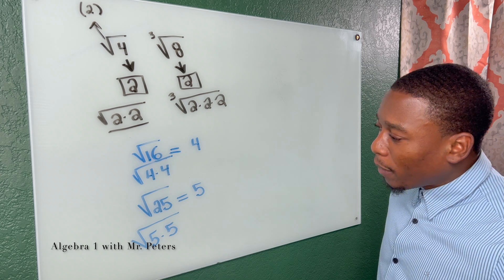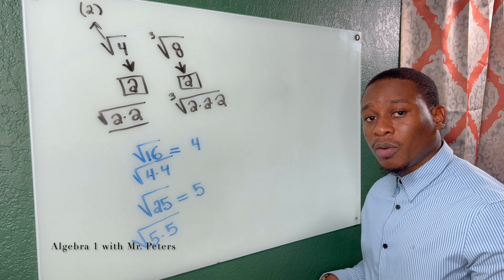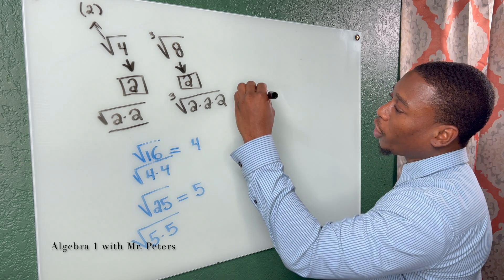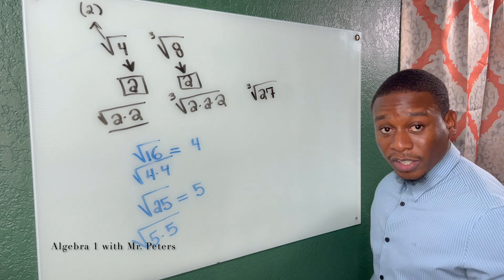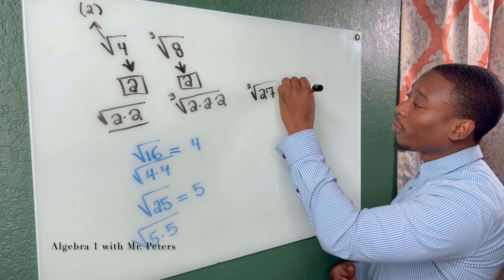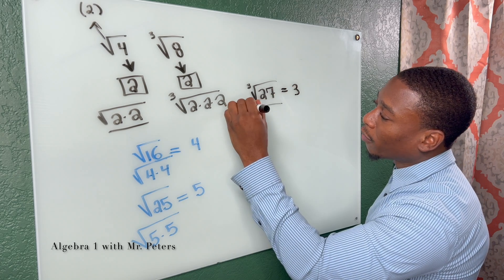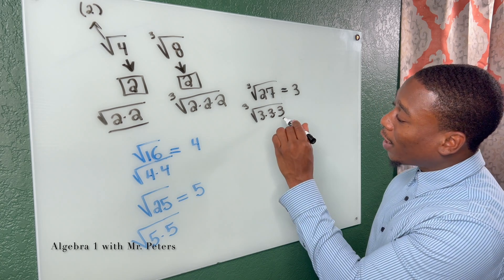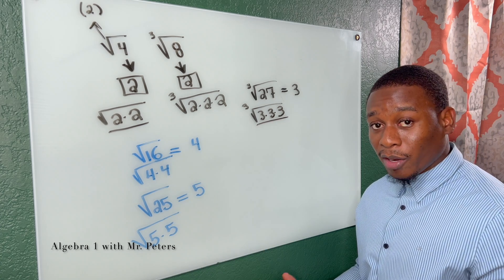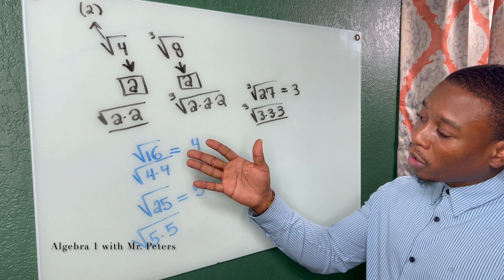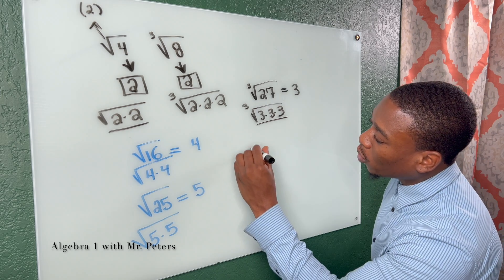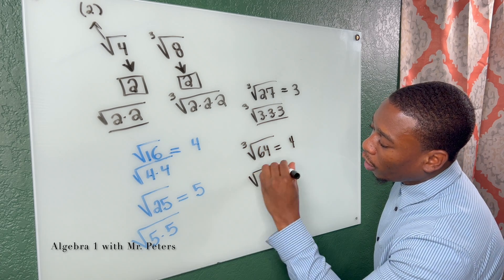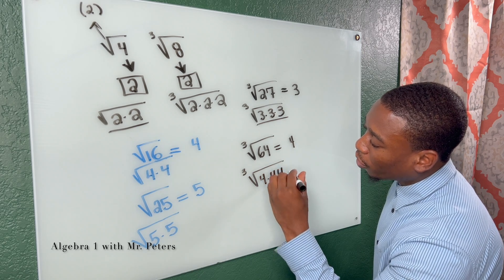Perfect cubes are the same concept except you multiply by that number one additional time. The cube root of 27 is 3 because 3 times 3 times 3 gives us 27 — a perfect triplet. Similarly, the cube root of 64 equals 4 because 4 times 4 times 4 gives us 64.